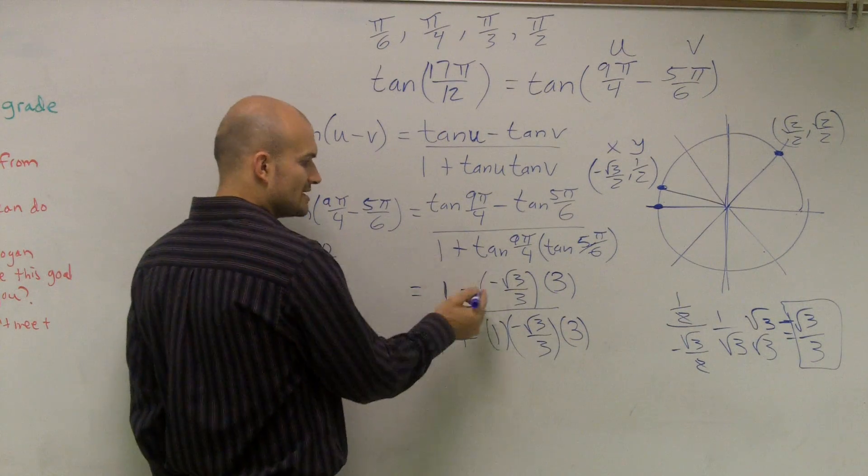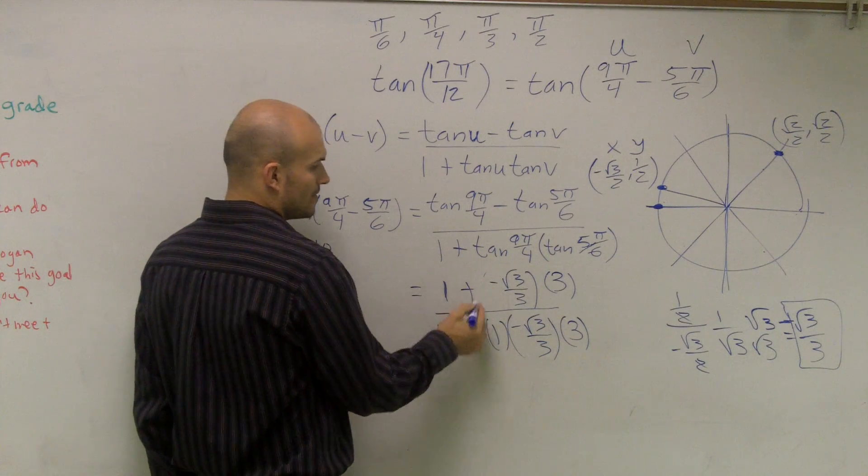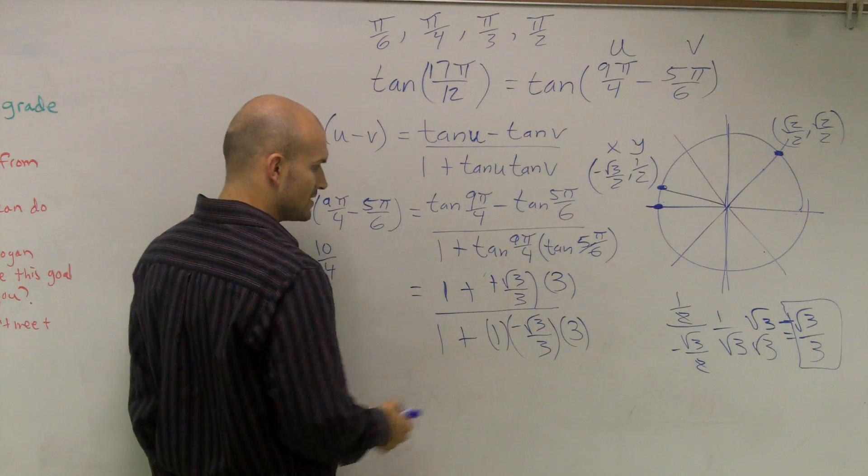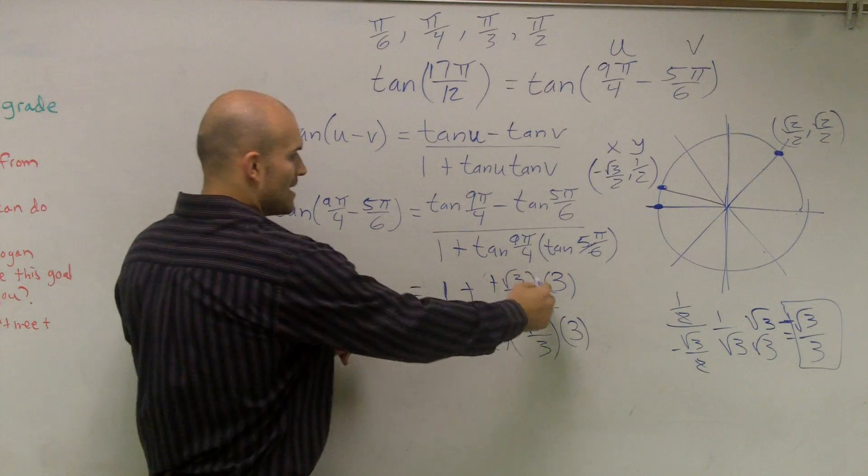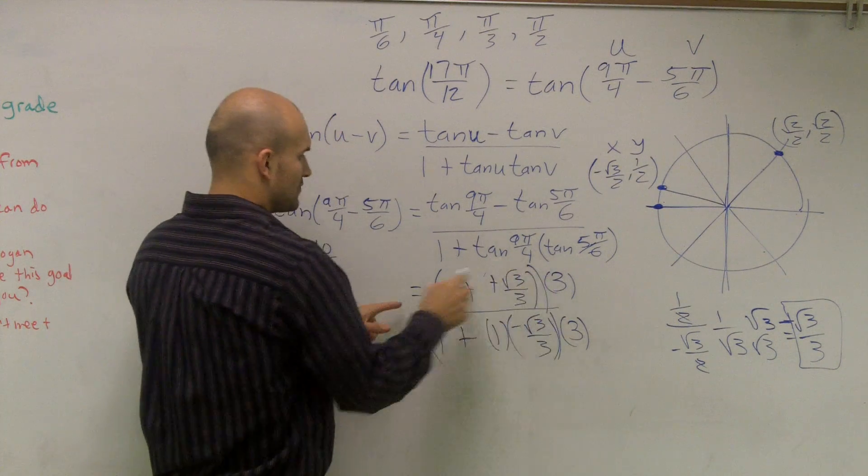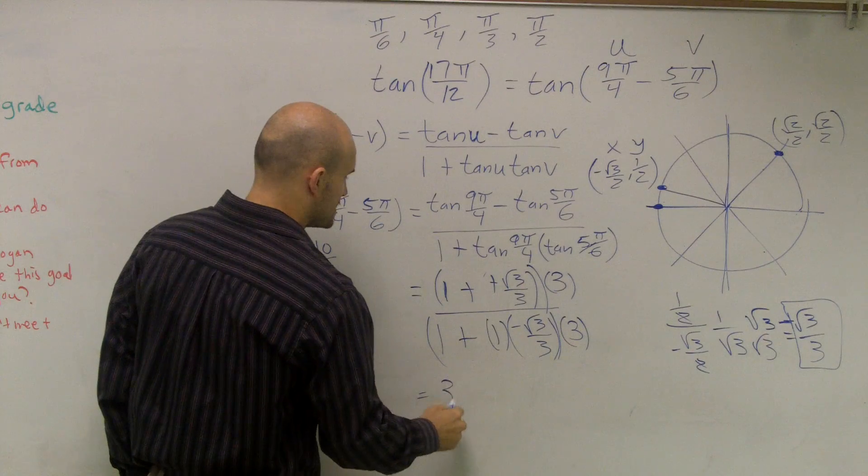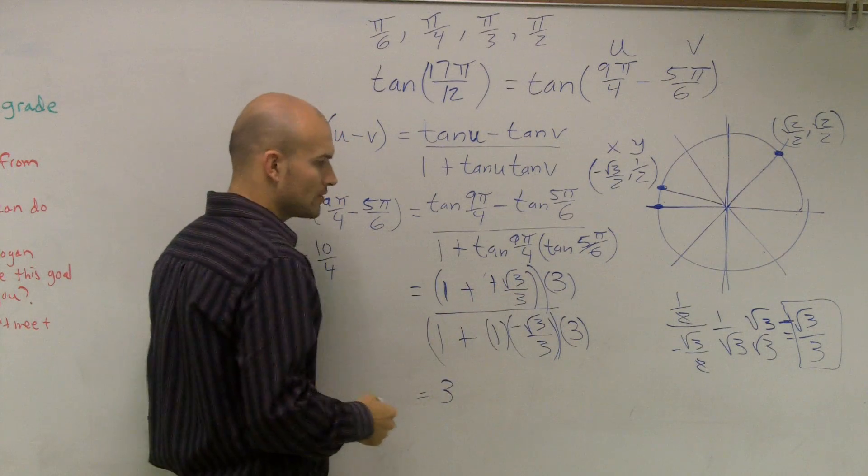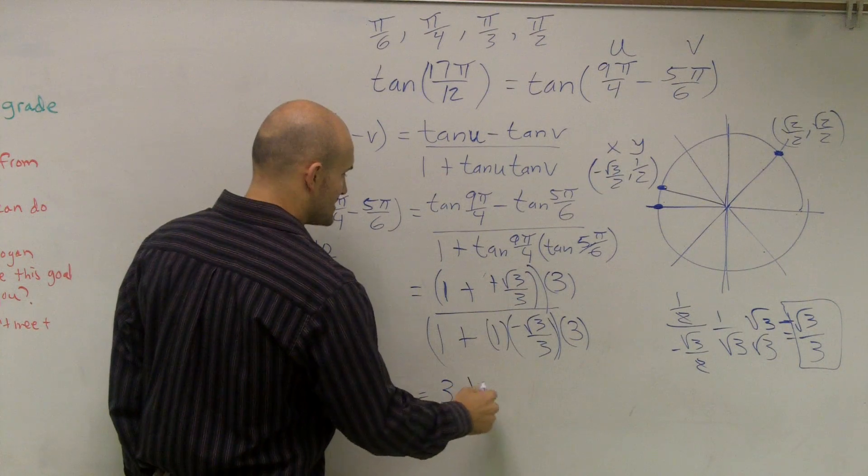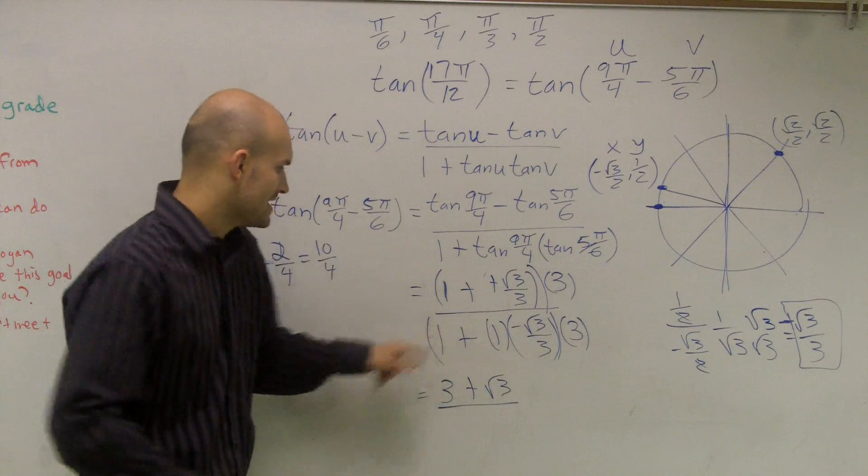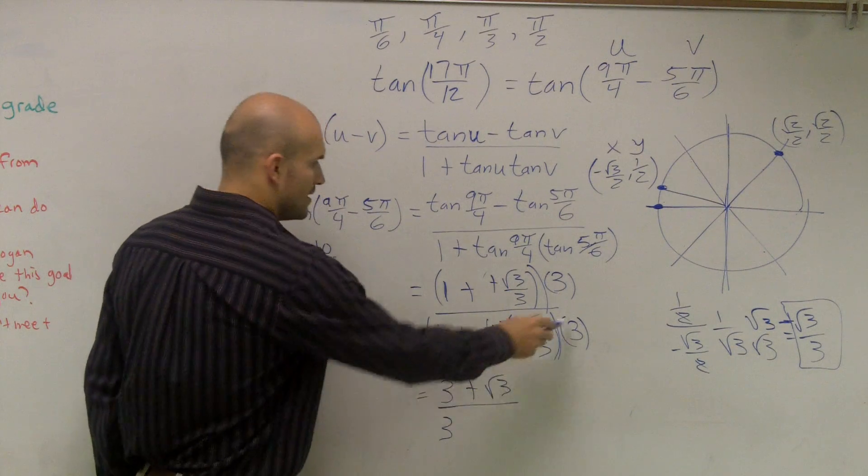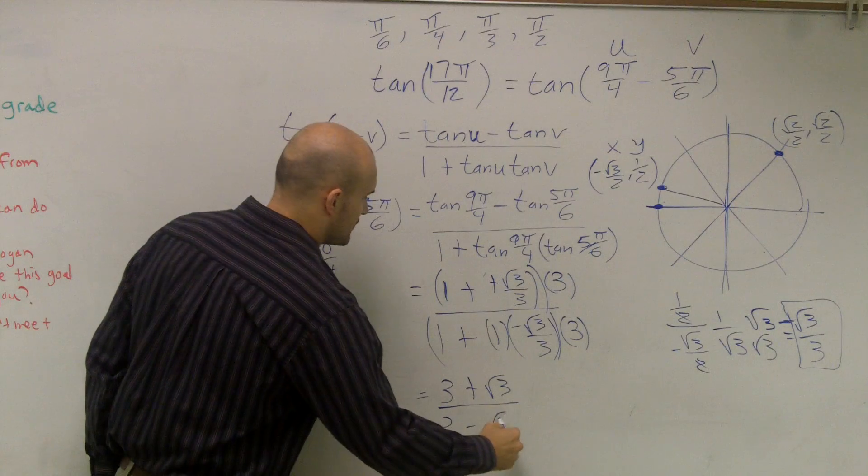Now, first of all, a couple things we can notice. Here I have a double negative. That can turn into a positive. So when I multiply my 3 times everything, I get 3 times 1, which is equal to 3, 3 times √3 over 3, which is equal to a positive √3. All over, 3 times 3, which is 3, and these cancel out to a negative √3.